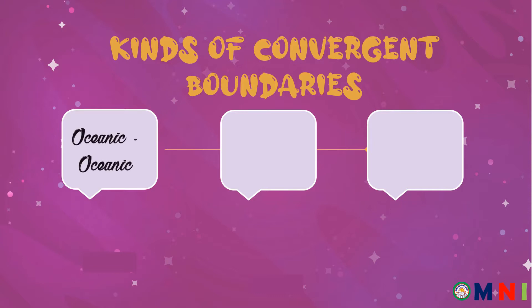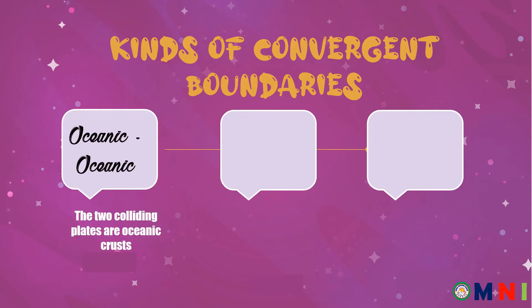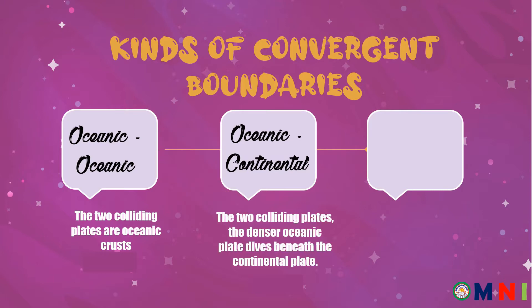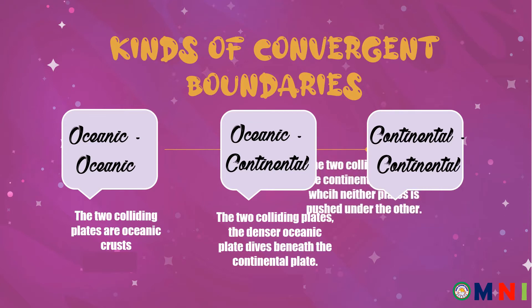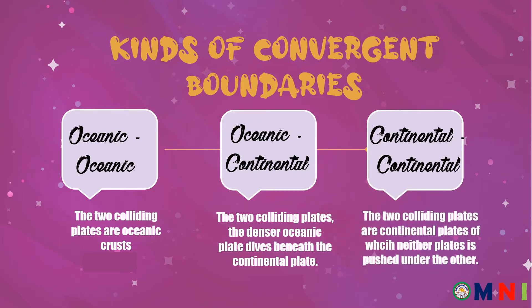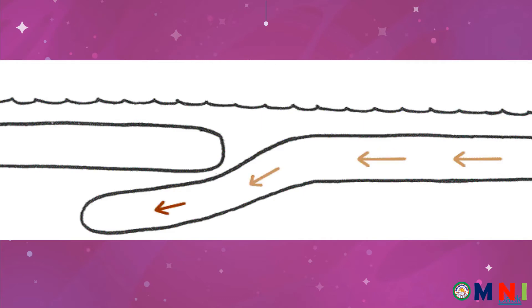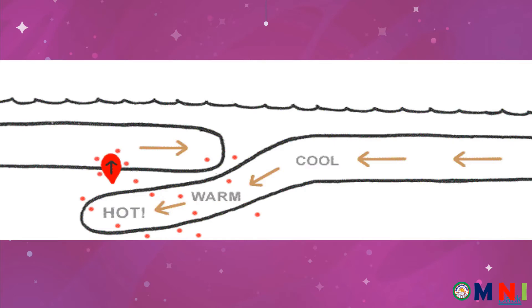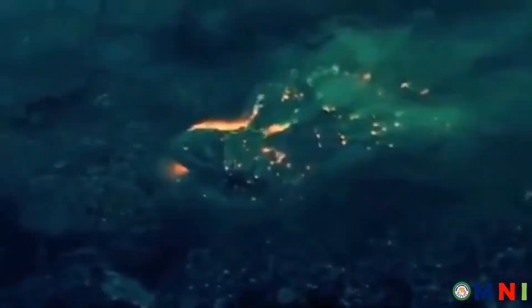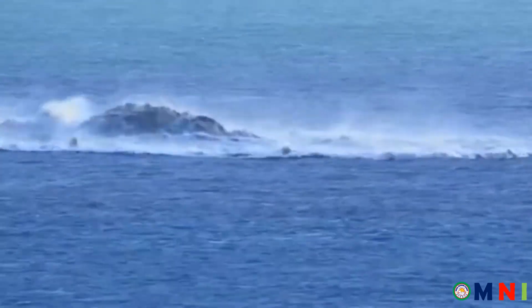First, we have the oceanic-oceanic convergent plate boundary, when the two colliding plates are oceanic crusts. Second is the oceanic-continental convergent boundary, when the denser oceanic plate dives beneath the continental plate. And the third type is the continental-continental, which occurs when the two colliding plates are continental plates. In the oceanic-oceanic convergent boundary, the younger, less dense plate goes on top while the older, denser plate moves under, slides into the asthenosphere, and becomes magma. When magma rises and breaks through the surface, lava piles up and forms volcanic island arcs — a chain of volcanoes aligned in an arc shape. The islands of Japan and the Marianas Islands are examples of volcanic island arcs formed through this process.